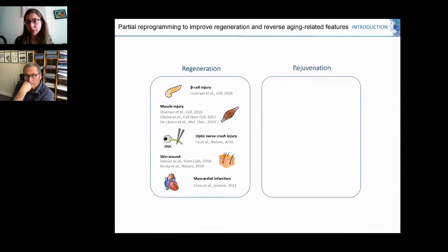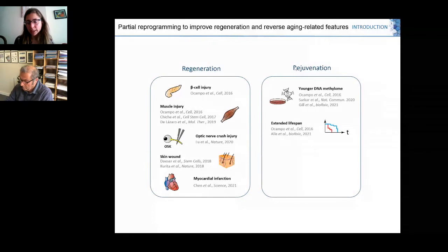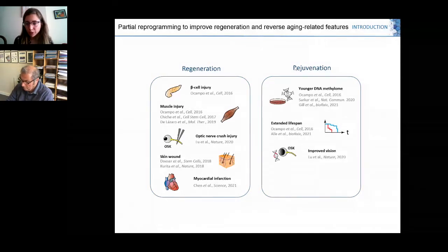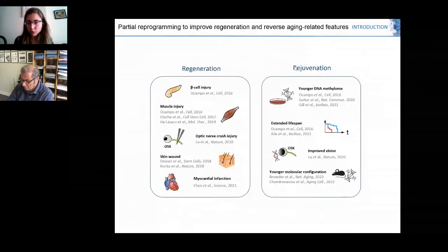In the case of rejuvenation, one or several pulses of OSKM expression can lead to younger DNA methylation, extended lifespan in progeria mice, and improved vision in old mice. Our lab has also published recently that one single pulse of OSKM in old mice can lead to a younger molecular configuration.